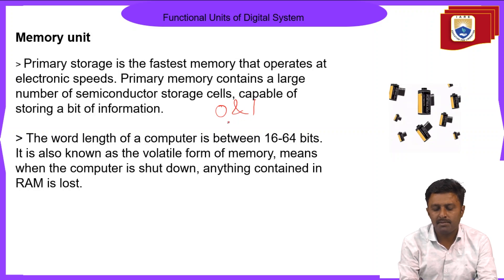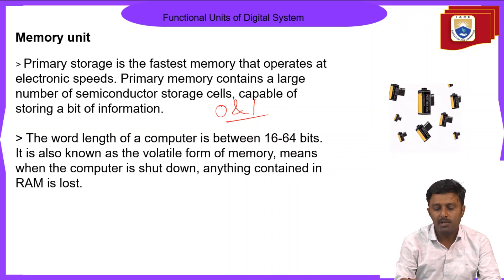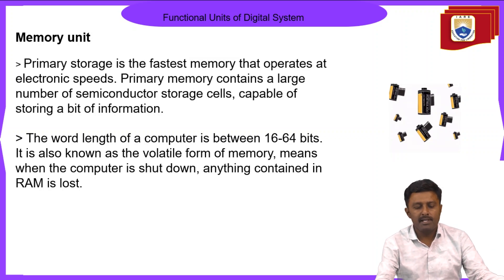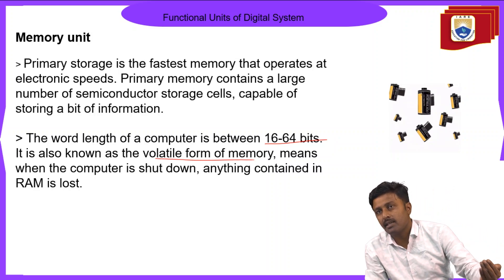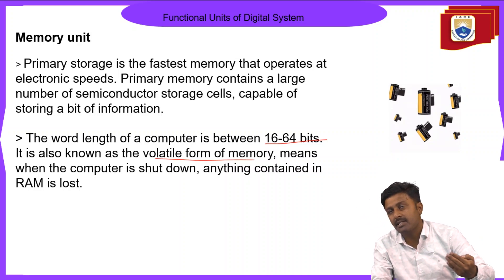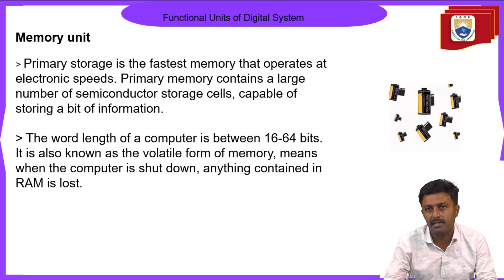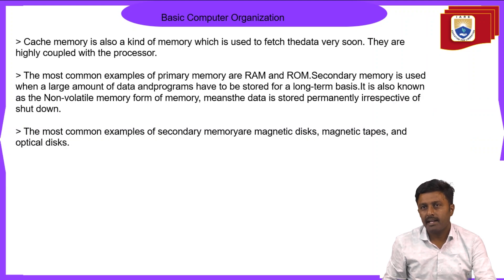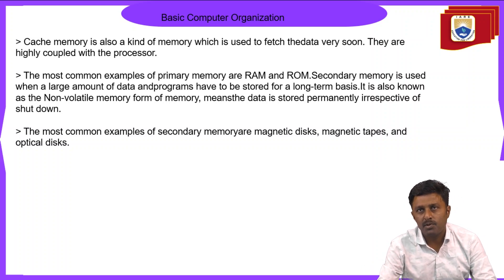The computer stores information in terms of bits — zeros and ones. Images, video, audio — all information is stored as binary bits. The word length in primary memory is 16 to 64 bits. Primary memory is volatile — when the computer shuts down, anything in RAM is lost. Primary memory is used to increase the speed of the computer. In secondary memory, the operating system and other data are stored. Cache memory is used between the memory and ALU to increase operation speed.